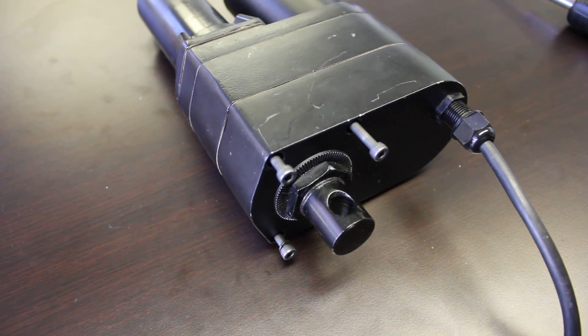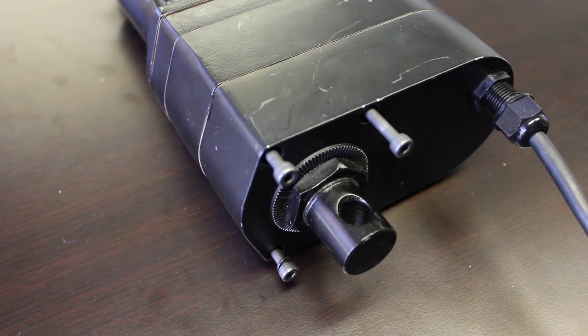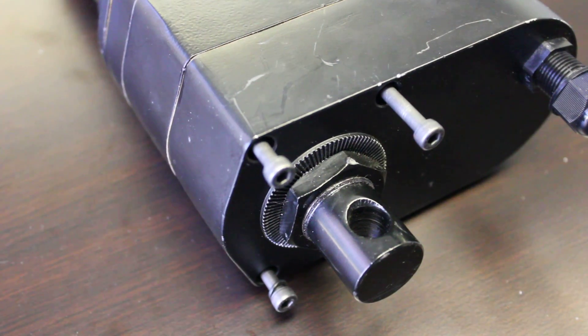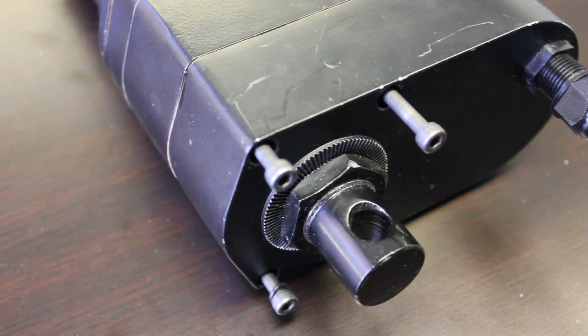Welcome to Progressive Automation's YouTube channel. Today we're going to show an instructional video of how to change the internal limit switch of our PA17 linear actuator.